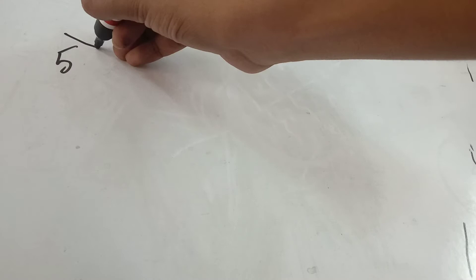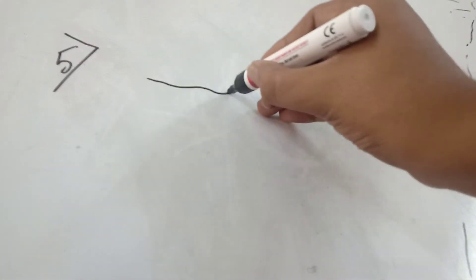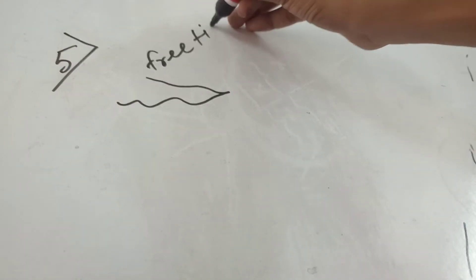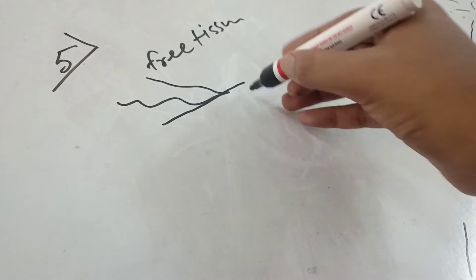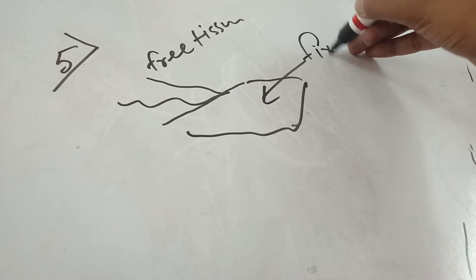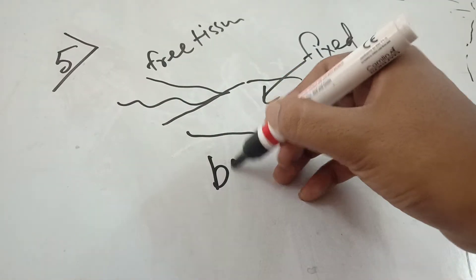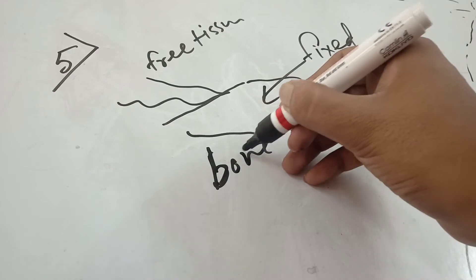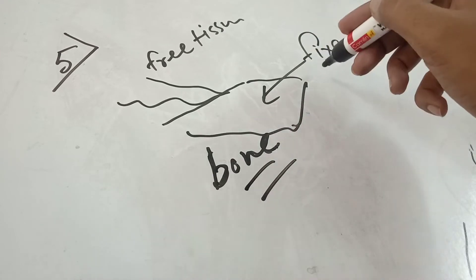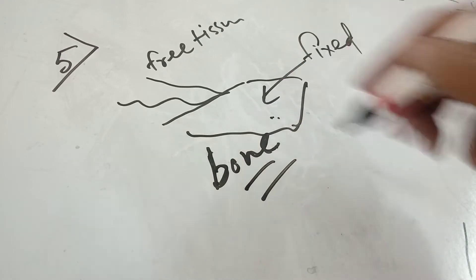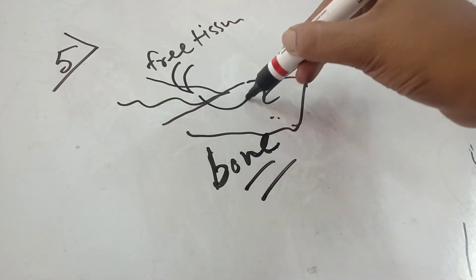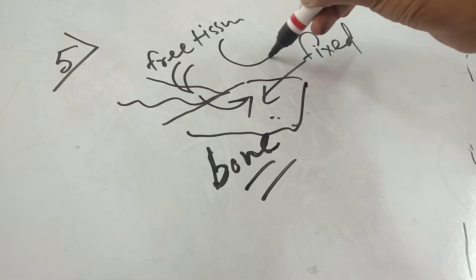Fifth principle: if one side has free tissue and the other side — past the incision line — has fixed tissue, meaning bone or any muscle or anything present just below the flap, the needle will always go from free tissue to fixed. Free to fixed.